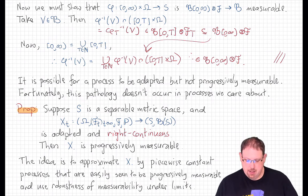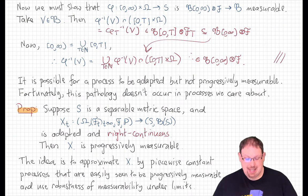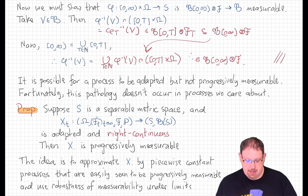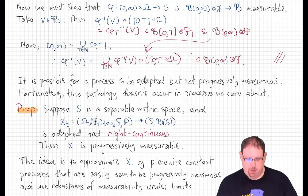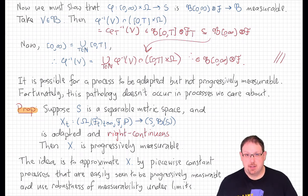Here's the proposition. Suppose that S is a separable metric space — you can just think of ℝ^d — and let X be an S-valued stochastic process defined on a filtered probability space. If that process is adapted and has right continuous paths almost surely, then it is in fact progressively measurable, and so all of these measurability issues won't bother us. The idea of the proof is to approximate the process X by one that is piecewise constant. It'll be easy to show that those approximating processes are progressively measurable, and then the robustness of measurability under limits will give the result.